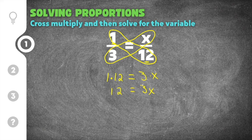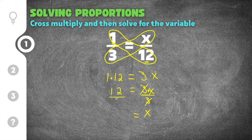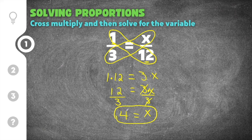To get x by itself we have to get rid of this 3. 3x is like saying 3 times x — even though it's not written, there's a multiplication symbol there. To undo 3 times x, you do the opposite, which is to divide by 3. Dividing both sides by 3, the 3s cancel and we get x by itself. 12 divided by 3 is 4. Our solution is x equals 4. We got this solution by cross multiplying numerator times denominator and denominator times numerator, then solving for x.